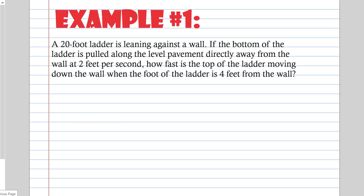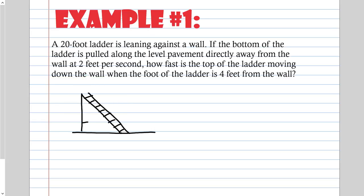Example 1: A 20-foot ladder is leaning against a wall. If the bottom of the ladder is pulled along the level pavement directly away from the wall at 2 feet per second, how fast is the top of the ladder moving down the wall when the foot of the ladder is 4 feet from the wall? I'll draw the floor, the wall, and the ladder. The ladder is 20 feet and is not going to shrink or get longer.